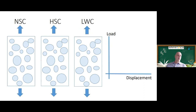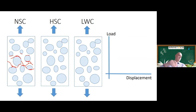In normal strength concrete pulled in tension, micro-cracks initiate at the interface between aggregate and matrix — the weakest link. As pulling continues, multiple micro-cracks grow, join, and eventually a localized crack forms. In high-strength concrete, the goal is to improve the interface and strengthen the matrix so that aggregates, interface, and matrix all have similar strength. This creates a more homogeneous material where a crack goes straight through without deflecting, producing a much more brittle behavior: the descending branch after peak drops steeply, and very little energy is absorbed.